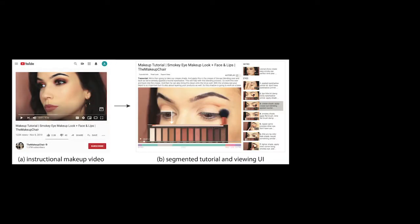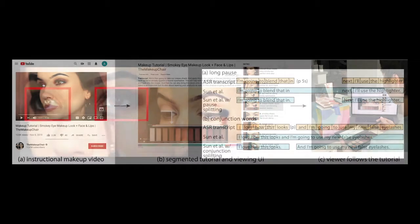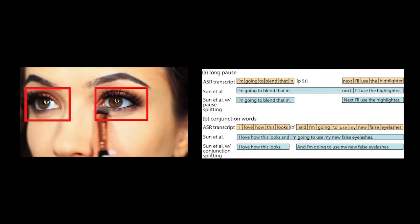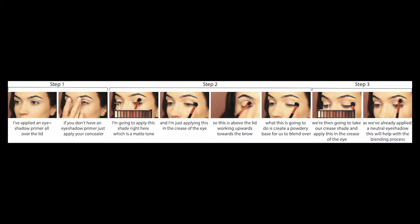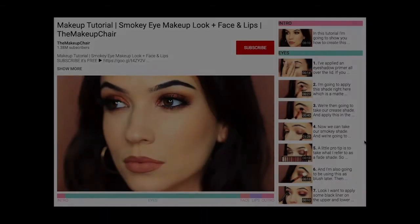In this work, we take an edited instructional makeup video and turn it into a two-level hierarchical tutorial that helps viewers to efficiently navigate the content. We use computer vision and text analysis to automatically identify line-level action steps and form course-level events based on the manipulated facial part.